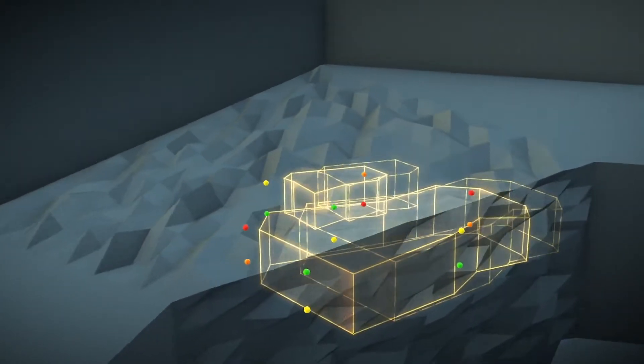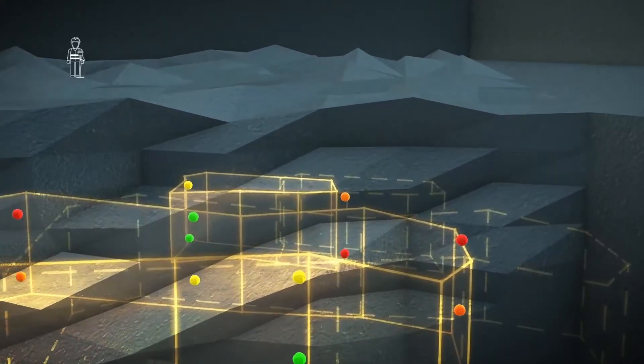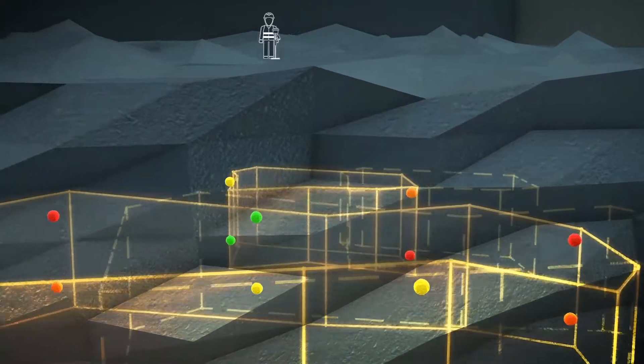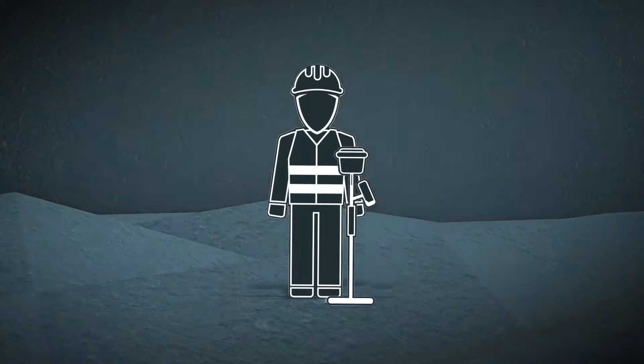As the ore shifts from the blast, so too do the strategically placed BMMs. Post-blast, the BMM recovery team moves across the muck pile to locate the shifted BMMs. The location data is collected and stored using the retrieval equipment.